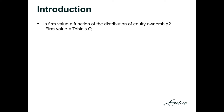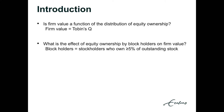The paper examines whether firm value is a function of the distribution of equity ownership, where firm value is represented by Tobin's Q. They do this by examining three independent variables. First, what is the effect of equity ownership by blockholders on firm value, where stockholders who own five or more percent of outstanding stock represent blockholders.